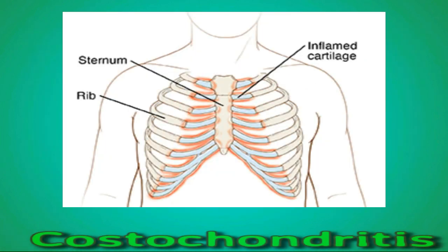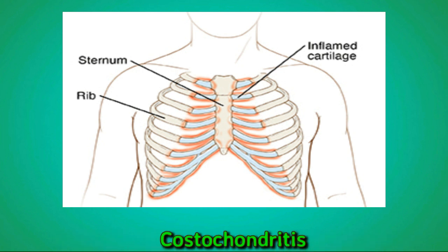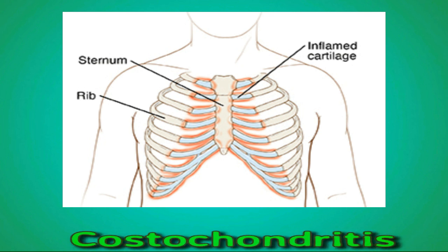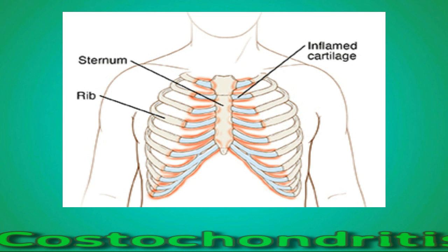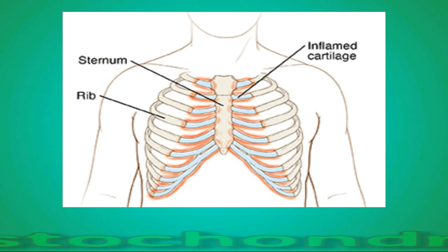Costochondritis is an inflammation of the connective tissue that joins a person's ribs to their breastbone. Costochondritis can cause pain that feels like chest pain, which can be one-sided.